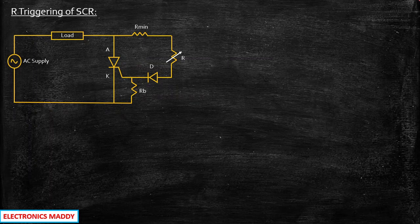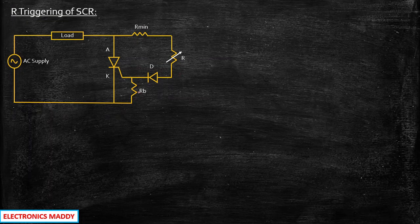R triggering of SCR is basically a circuit that is used to turn on the SCR. R here stands for resistor. If you carefully observe, you have resistive elements that are connected with the gate terminal of SCR, and that is why it is called R triggering of SCR.